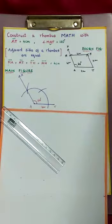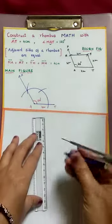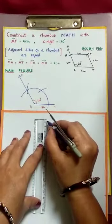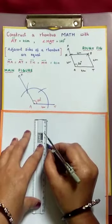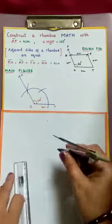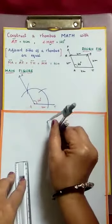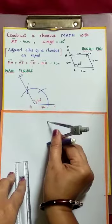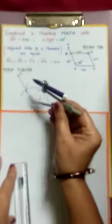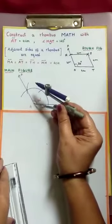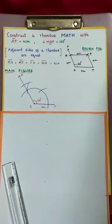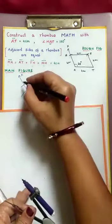Next, we have to take 4 cm radius again. Take starting point and ending point at 4. Take 4 cm radius, placing your needle end at A, cut this AX ray which intersects at M.